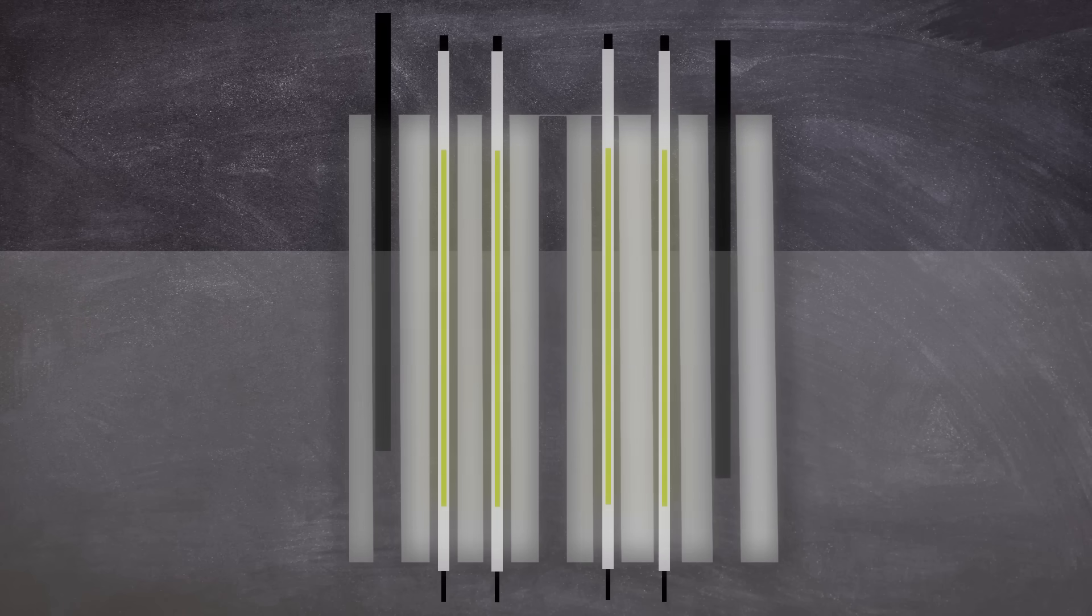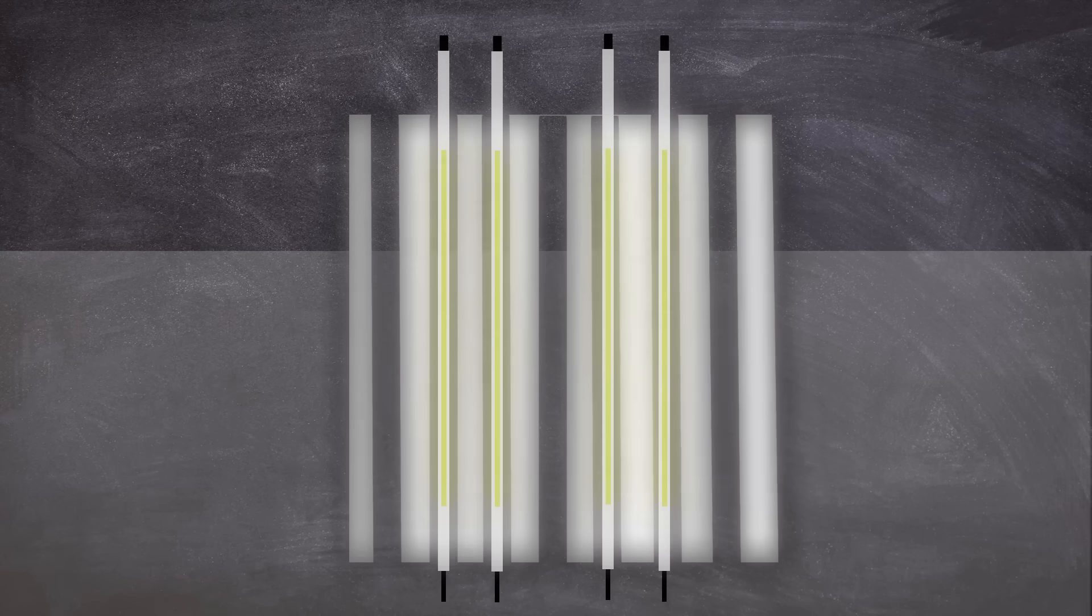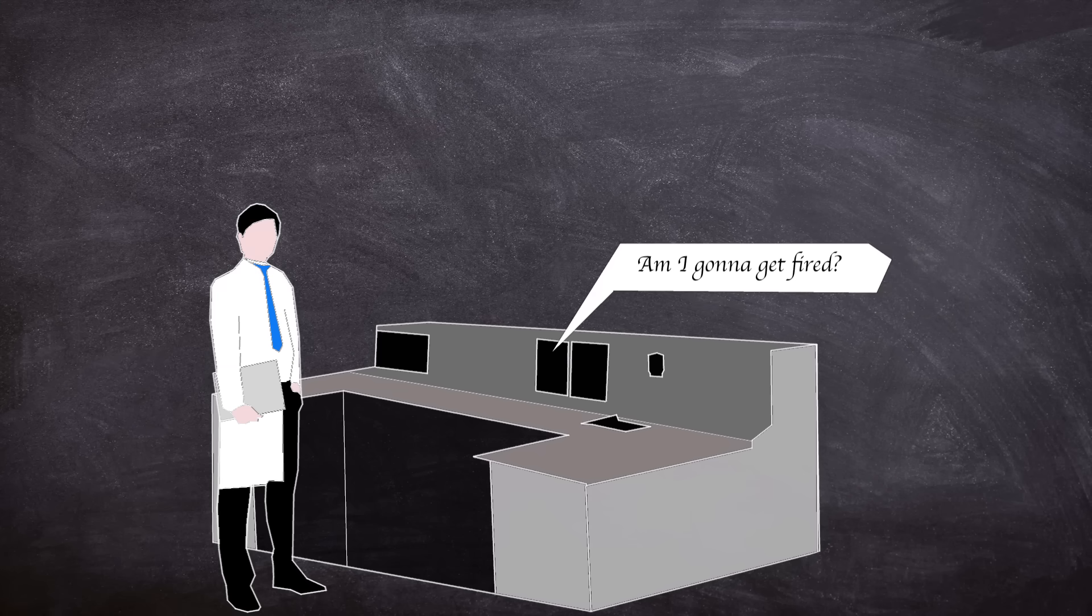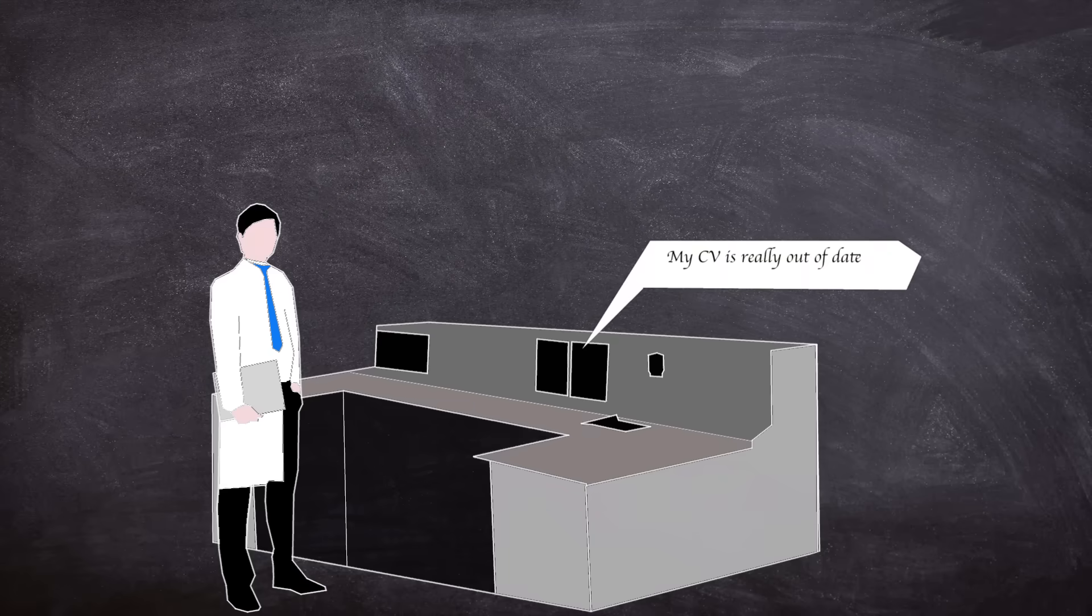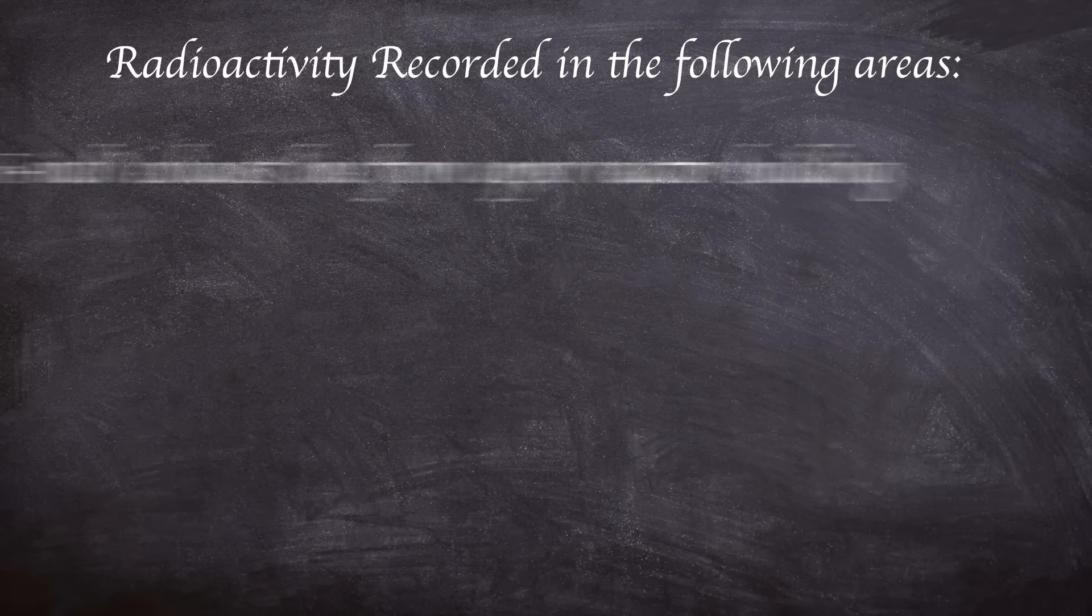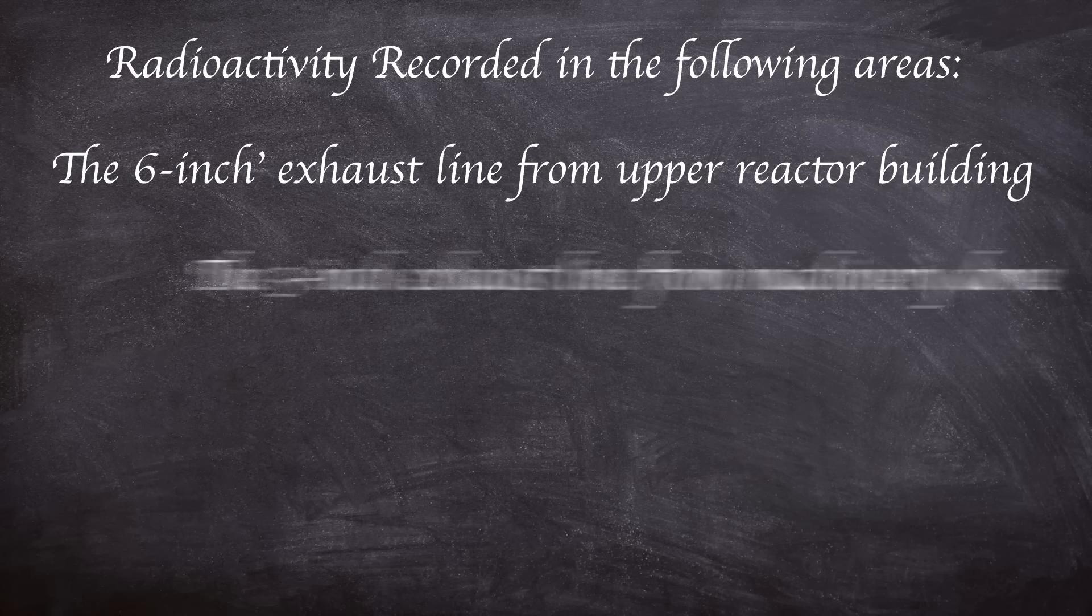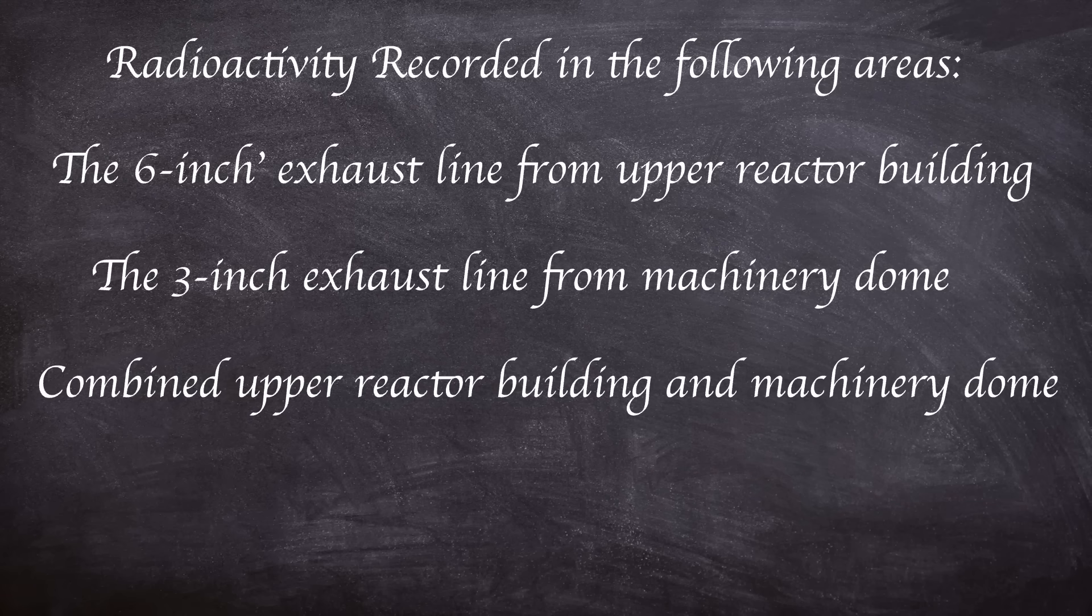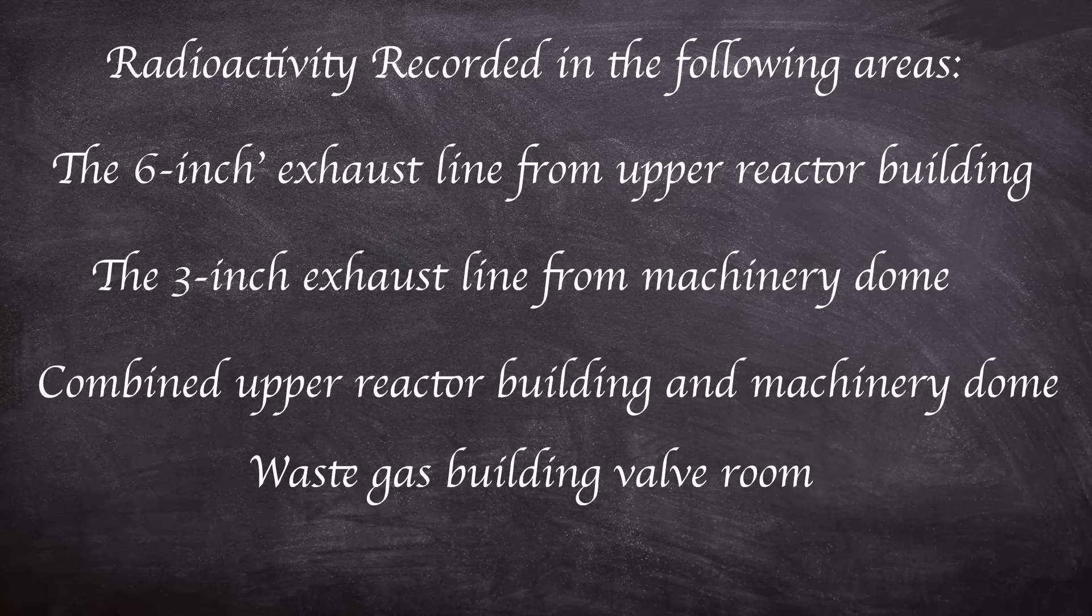At this time, the power output was at 31 megawatts. At 3:09 PM, radiation alarms in the upper reactor building ventilation system duct alerted the operators. Elevated radiation was recorded in the following areas: the 6-inch exhaust line from the upper reactor building, the 3-inch exhaust line from the machinery dome upper reactor building and machinery dome exhaust, the waste gas building valve room, and the fission product detector building.